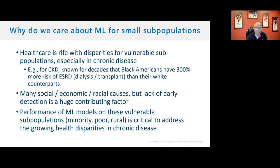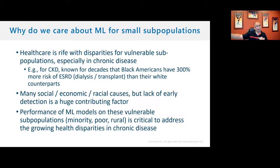Why do we care about machine learning for small subpopulations? Healthcare has huge disparities for vulnerable subpopulations — true not just in acute disease but in chronic disease. For chronic kidney disease, it has been known since 1982 that Black Americans had four times the rate of transplant than their white counterparts, despite having the same incidence and prevalence. They both got the disease, but one progressed faster. It's largely environmental — access to care, socioeconomic factors, social determinants of health.